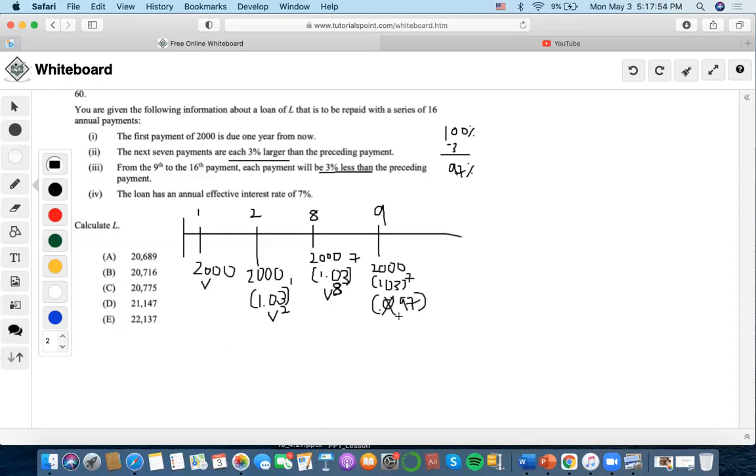We're going to discount this back to time nine because time equals zero is our comparison date. Now we go to 10 and we're going to see that all the way to 16 we're gonna see that it will be $2000 times 1.03 to the seventh times 0.97 to some power, times v to the 16.